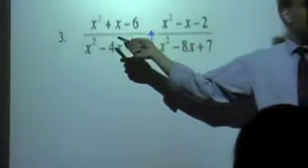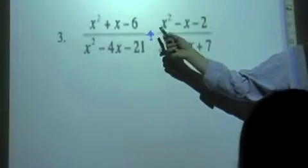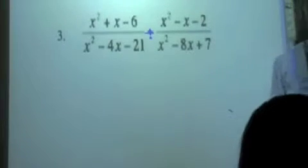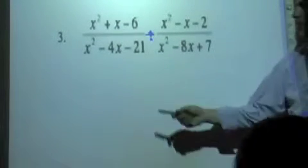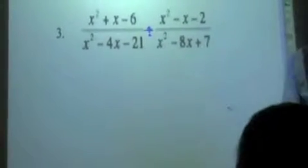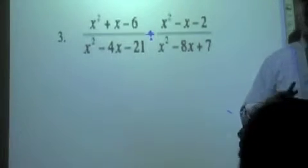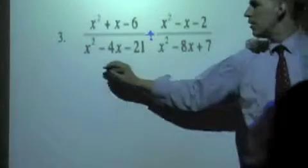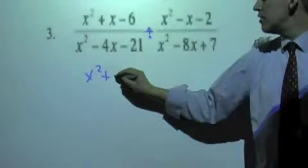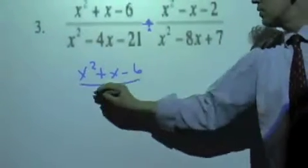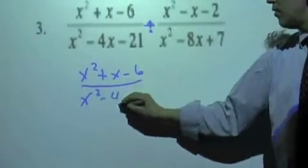And number three, what is the operation between these two rational expressions? Christian? Division. When we divide, it is essentially we are multiplying by what? Reciprocal. That's the first thing you've got to do. And there's no shortcut. You've got to go ahead and write the whole thing out.